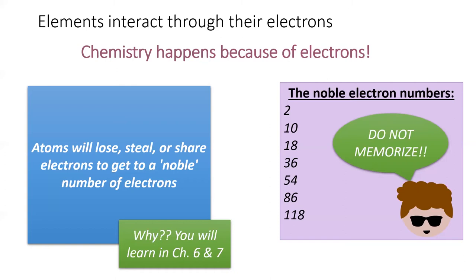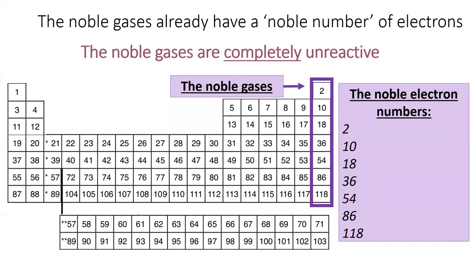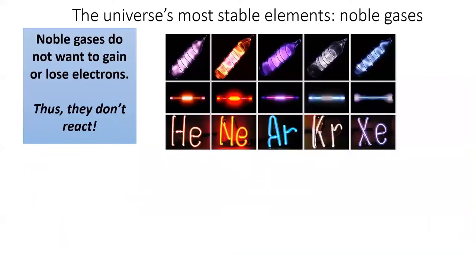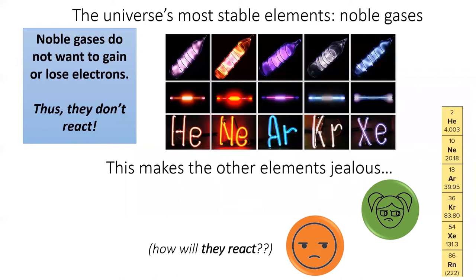Now, there's no need to memorize the noble numbers of electrons because they are written on the periodic table. Specifically, the column of the table that contains noble gases. Each of these elements already has a noble number of electrons, which is what makes them so unreactive. The noble gases are quite happy the way that they are. They don't want to gain or lose or share electrons. Therefore, they don't react with anything. This can make the other elements quite jealous, and it often causes them to react violently.